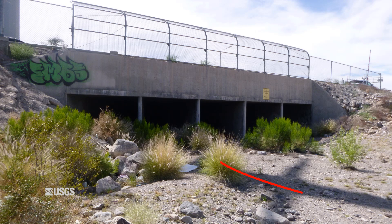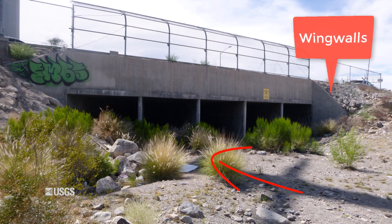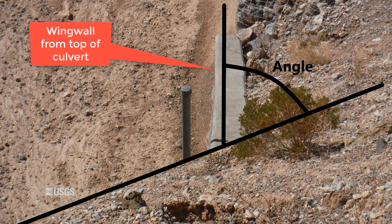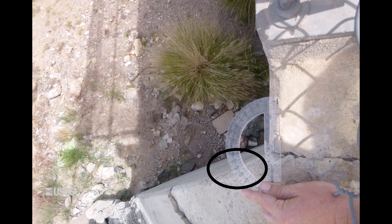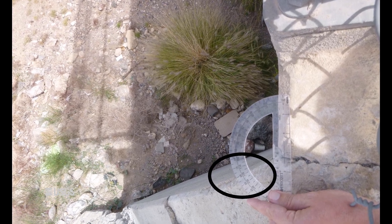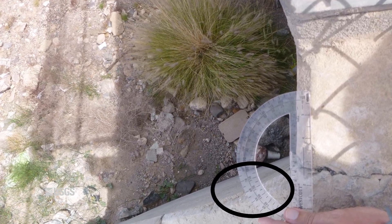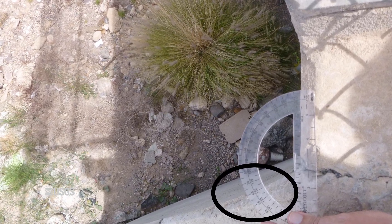Next, let's focus on the entrance. Depending on the culvert, it may or may not have wing walls. Although the length of the wing walls are important for locating the approach cross-section, we are now focused on their angle. The angle you want to measure is the one between the culvert entrance perpendicular to the flow and the wing walls. The easiest way is to measure this directly — put a protractor on top of where the culvert and wing walls come together and measure the angle.